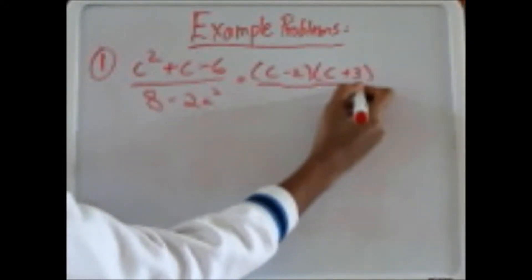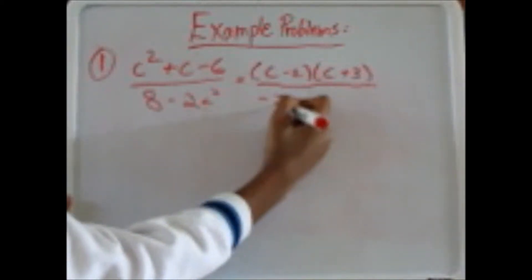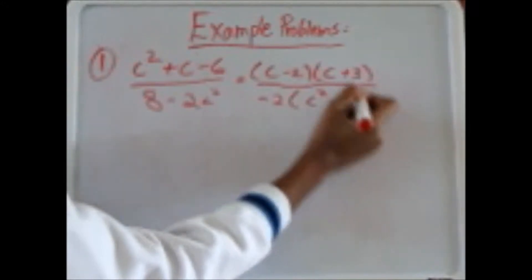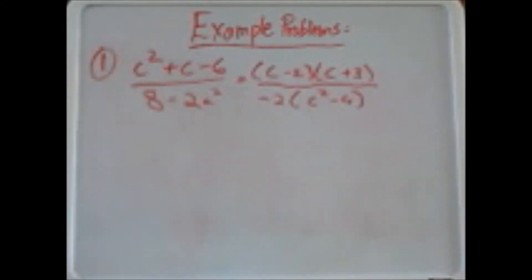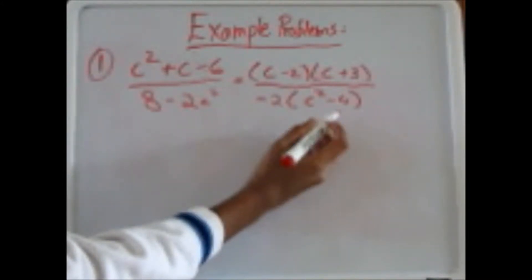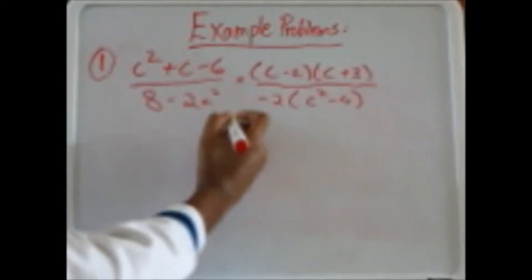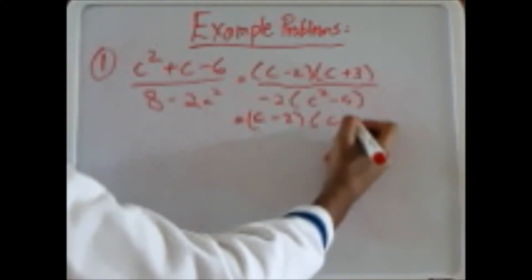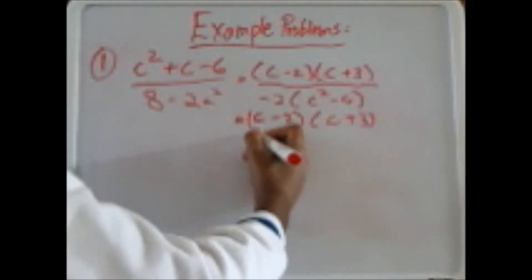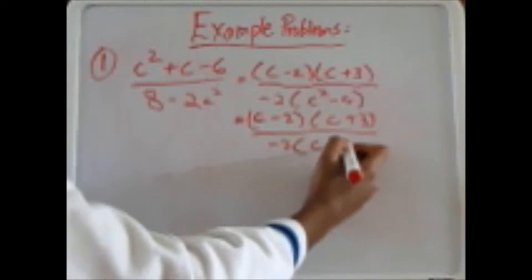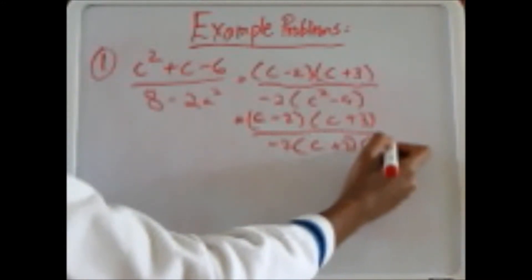On the bottom, we can take out the GCF, which is negative 2, and we get c squared minus 4. We can see that on the bottom there's a difference of squares pattern, so this can be factored out even more. So it's c minus 2 times c plus 3 over negative 2 times c plus 2 times c minus 2.